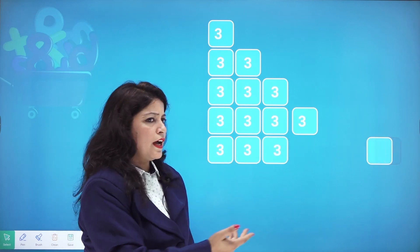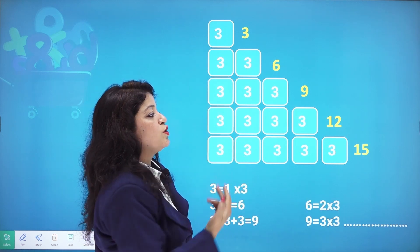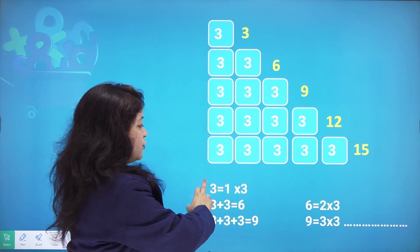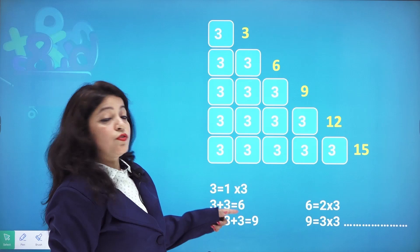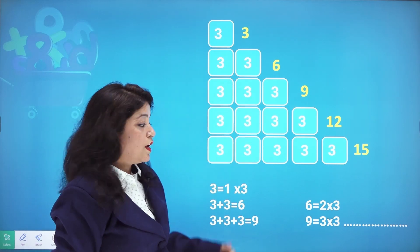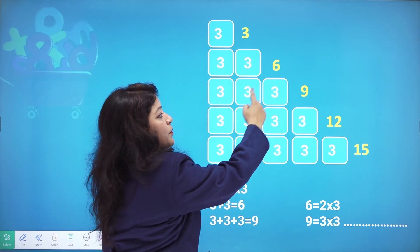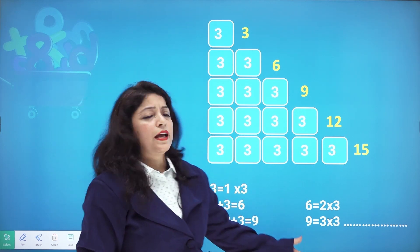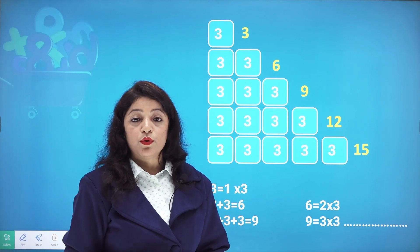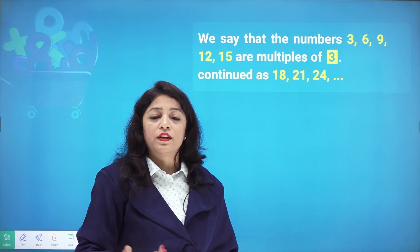If 3 is written 2 times, 3 times, 4 times, 5 times, 6 times, and so on, we get 3, 6, 9, 12, 15. For example, 3 plus 3 is 6, which means 2 times 3 is 6. And 3 plus 3 plus 3 is 9, which is 3 times 3. So the multiples of 3 are 3, 6, 9, 12, 15, and so on.